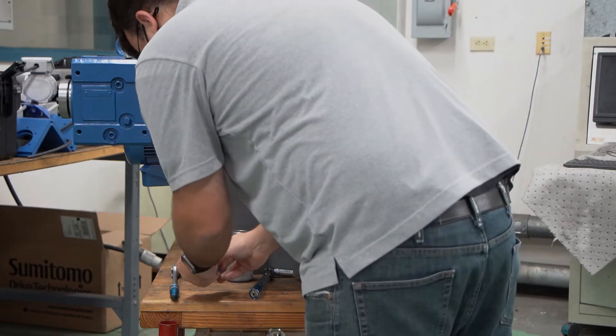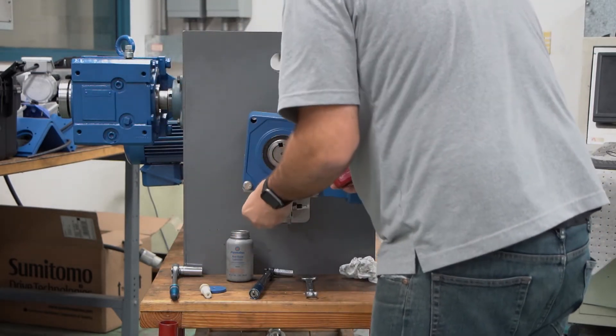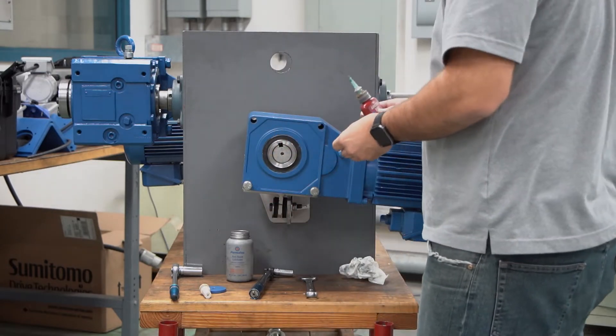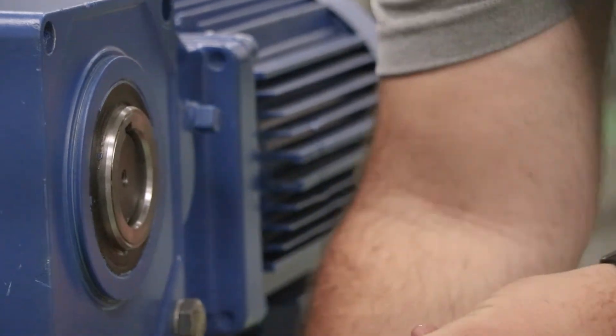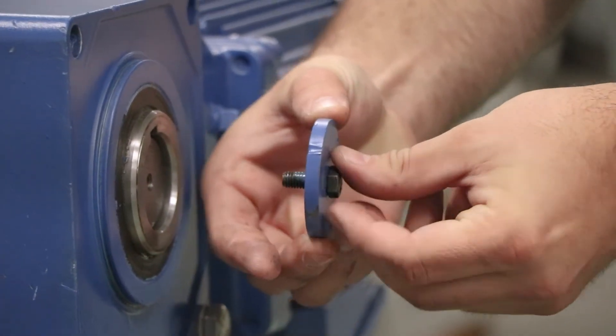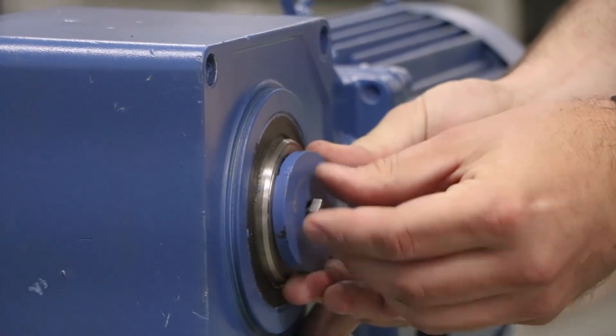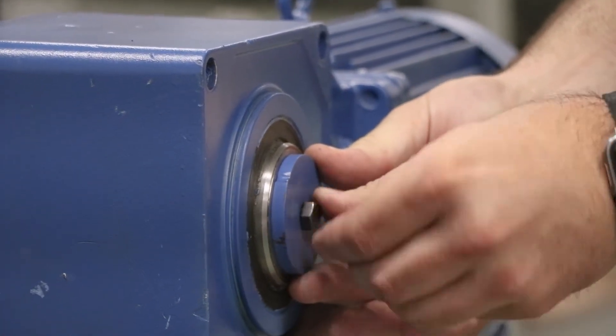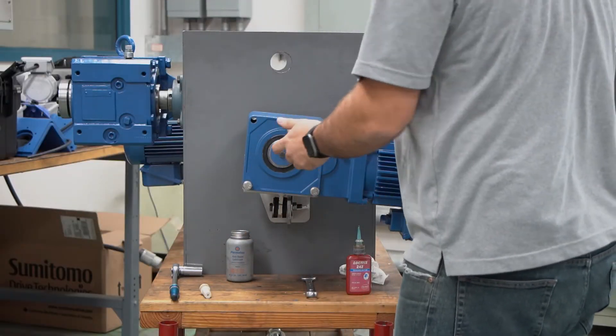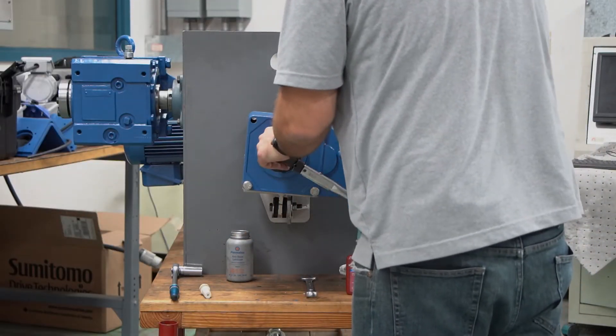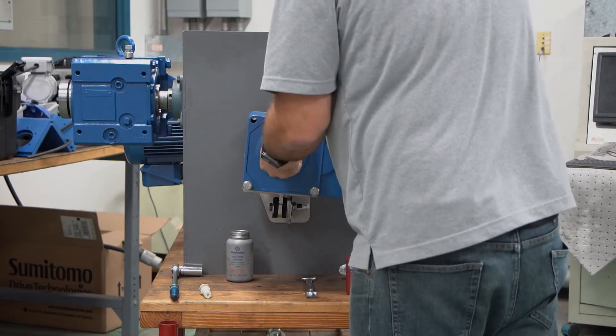Now to secure the reducer to the shaft, we'll take a keeper plate with the bolt. We'll put a little bit of blue Loctite on the bolt, put the keeper plate through, and secure the bolt to the end of the shaft. You can see there how the keeper plate is a little bit bigger than the bore of the reducer, so that it keeps the reducer on the shaft pulled tight against the shaft to keep it from falling off during operation or vibrating off towards the end.